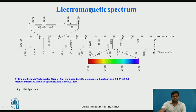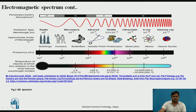This is the electromagnetic spectrum. As you can see, this is the entire spectrum — from gamma rays at the lower frequency end, through microwaves, infrared, visible spectrum, and ultraviolet into higher frequencies. The temperature also increases with increasing frequency, as shown here.